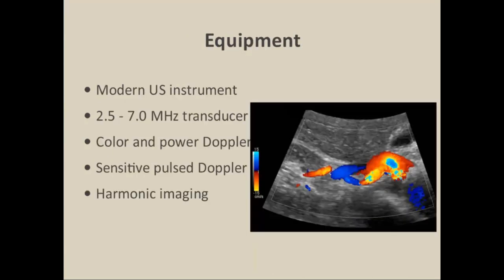In terms of equipment, we like to use our best units — those that have sensitive color, power Doppler, as well as pulsed Doppler imaging. The usual frequency range is somewhere between 2.5 to 7 MHz depending on the size of the patient. For small patients you can go up in frequency; for very large patients you'll want to go down for better depth penetration. I routinely utilize harmonic imaging because it improves the resolution and quality of our studies.